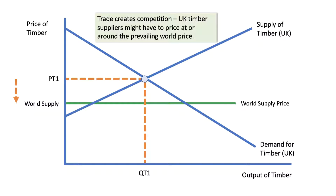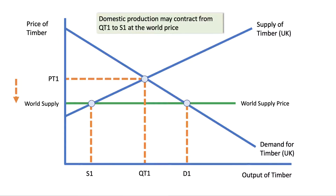One of the key features of trade is that it creates competition — an increased intensity of competition between suppliers. I'm going to make a working assumption that UK timber suppliers can no longer charge PT1 for their timber but in fact may have to price at or around the prevailing world price shown by the green line. Effectively they become a kind of price taker in the market.